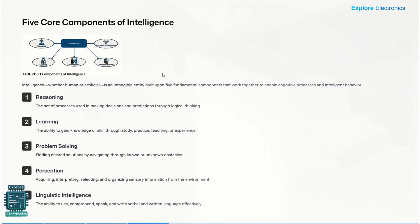Then comes the next topic: five core components of intelligence. Those were the different types of intelligence Howard Gardner gave us. To generalize them into five core components, we have reasoning, linguistic intelligence, learning, perception, and problem solving. These are the five components of human intelligence — or we can say machine intelligence.